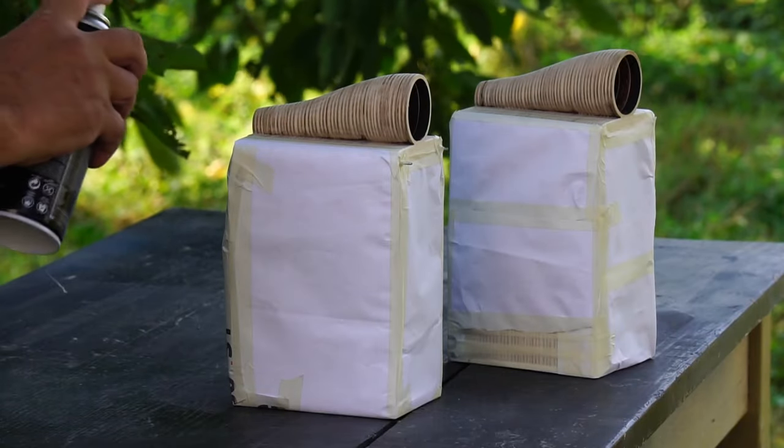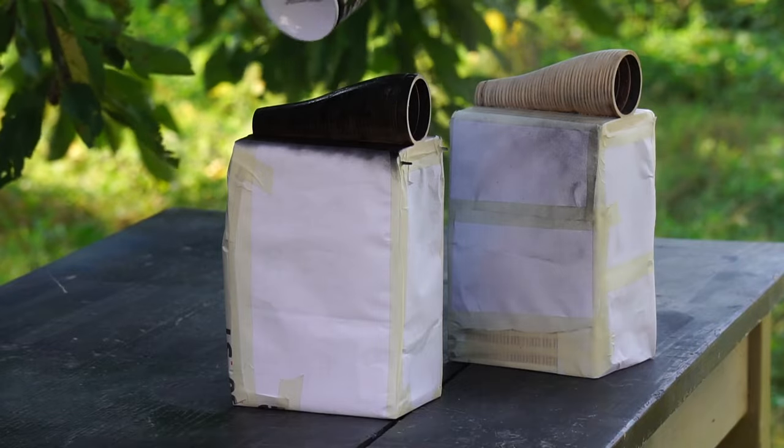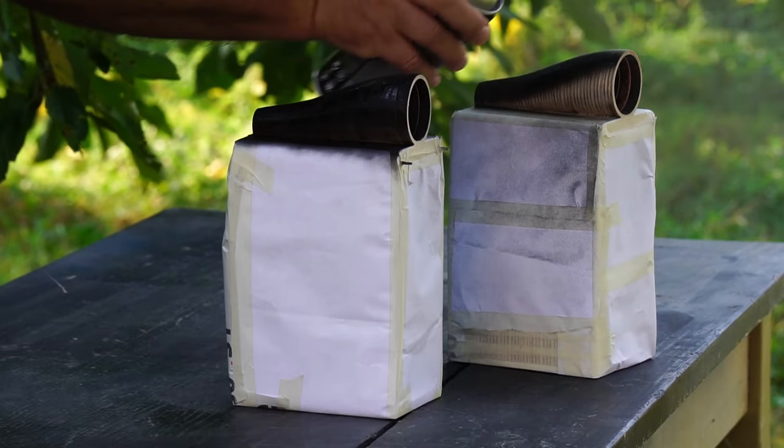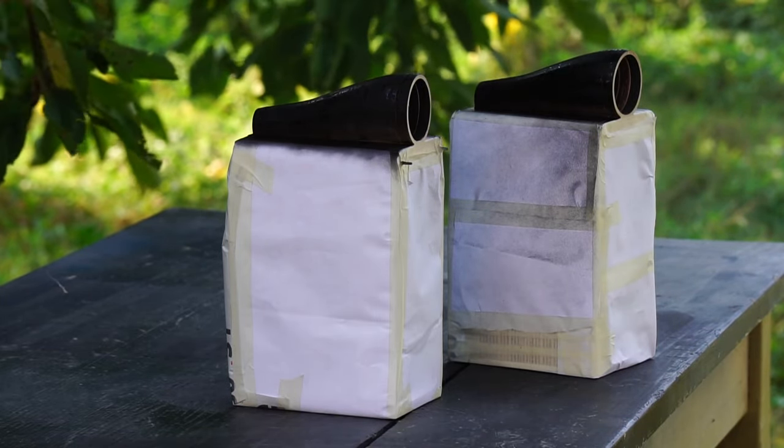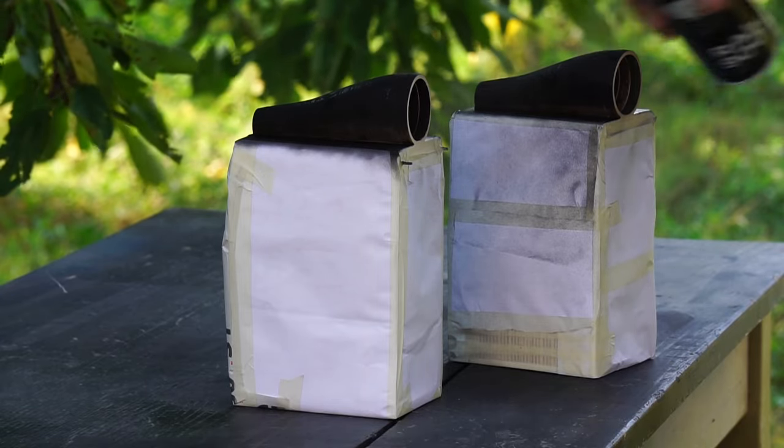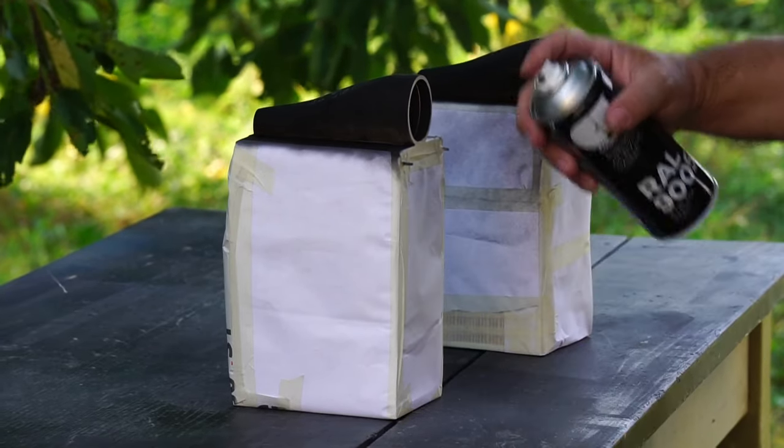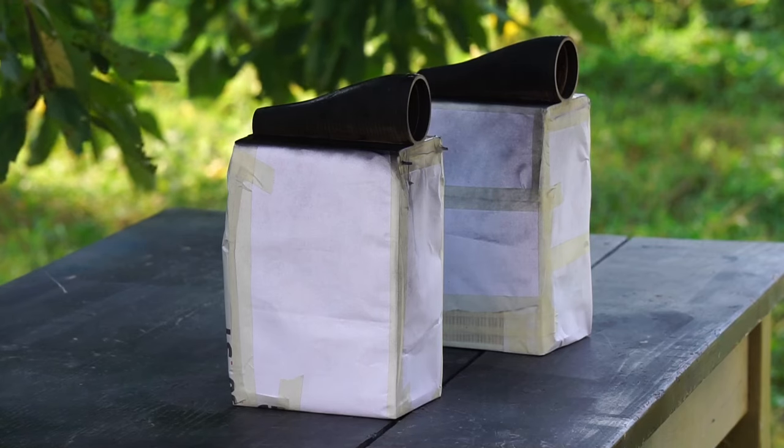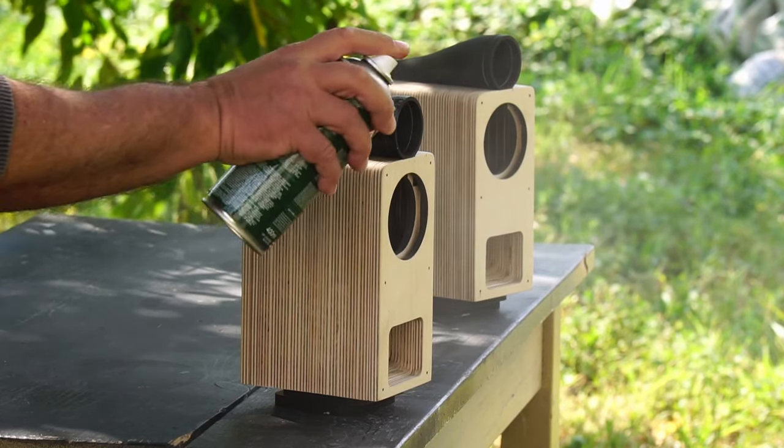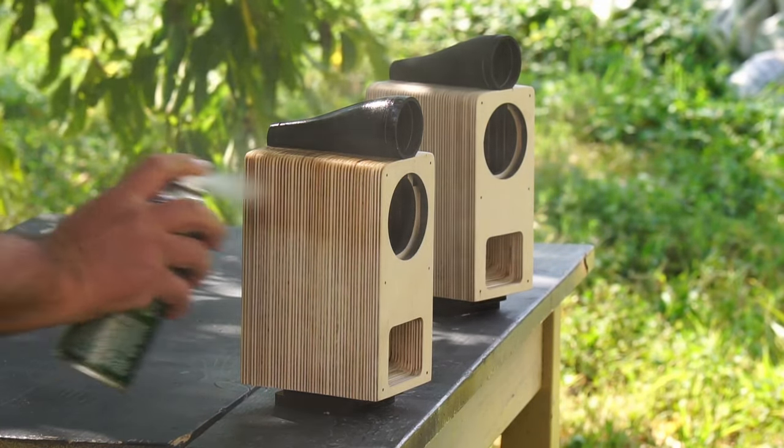I tape the lower part of the speakers and paint the area of the tweeter with matte black. Then I apply clear varnish 3-4 times to achieve the required effect.